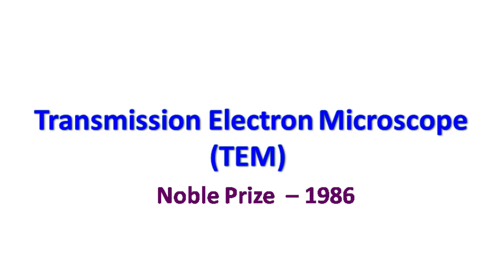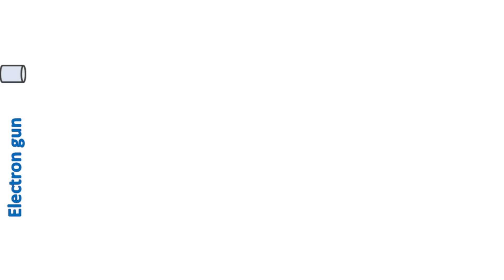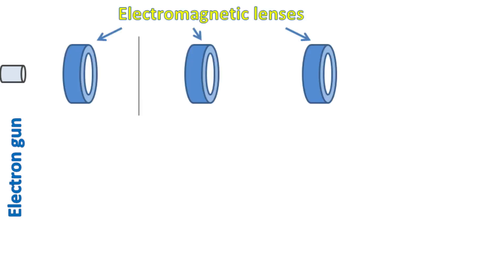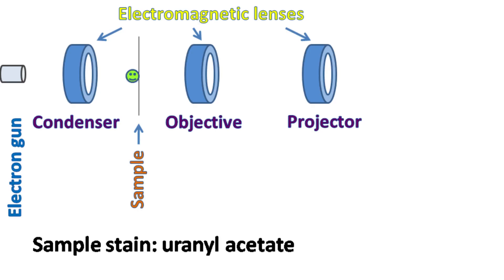Let's see the construction of transmission electron microscope. The transmission electron microscope has an electron gun as a source of electrons. As the moving electrons have a magnetic field, they can be easily focused using electromagnetic lenses. Just like an optical microscope, TEM has a condenser lens, objective lens, and a projector lens. However, these are all electromagnetic lenses.